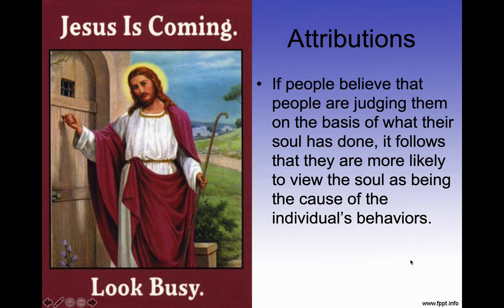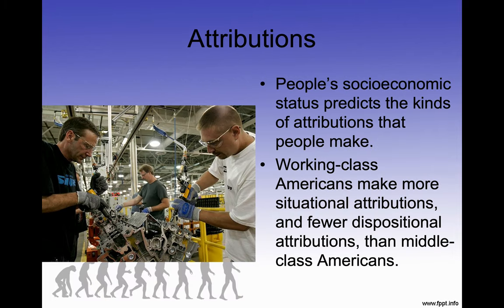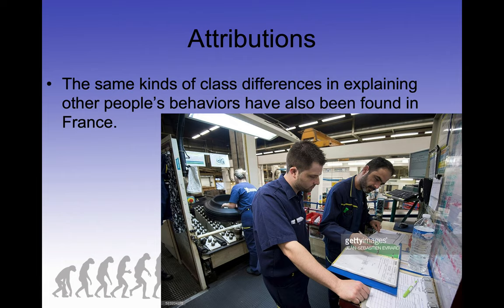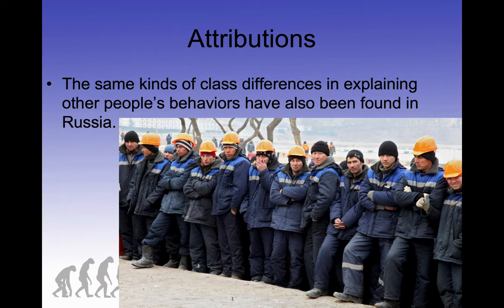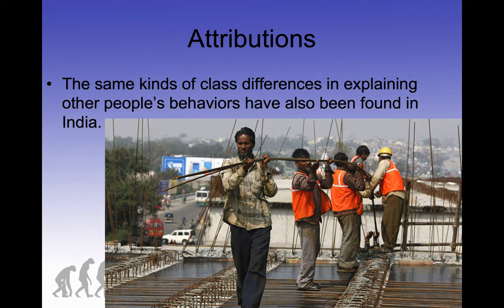People's socioeconomic status also predicts the kinds of attributions they make. Working class Americans make more situational attributions and fewer dispositional attributions than middle class Americans. They are far more collectivistic in their way of thinking because they're doing the same thing every day. The same kinds of class differences in explaining other people's behaviors have been found in France, Russia, and India.